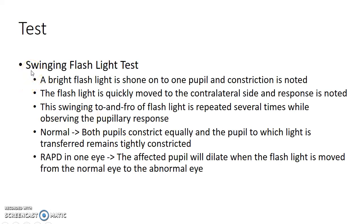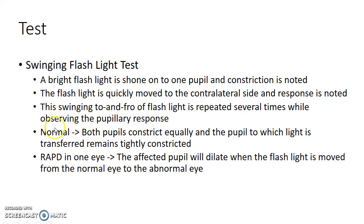Now let us look at the swinging flashlight test, used to detect RAPD. A bright flashlight is shone onto one pupil and constriction is noted. The flashlight is then quickly moved to the contralateral side and the response is noted. This swinging to and fro of the flashlight is repeated several times while observing the pupillary response.